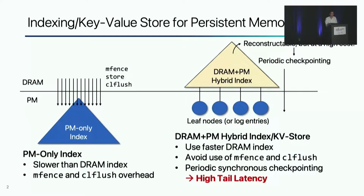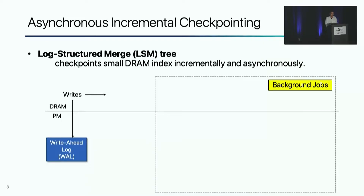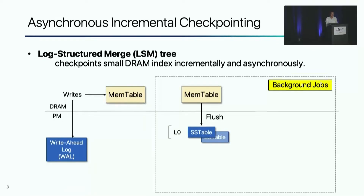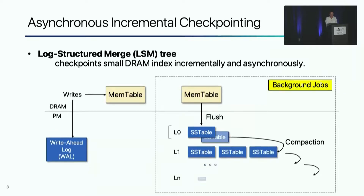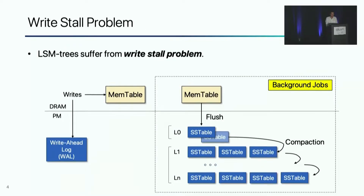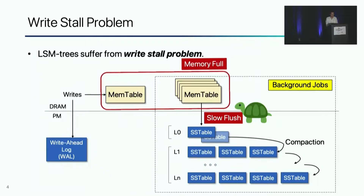To reduce the recovery time, the DRAM index can be checkpointed periodically. However, this causes very high tail latency because write operations are blocked during checkpointing. A better approach is asynchronous incremental checkpointing. Log-structured merge trees buffer writes in a small DRAM index called memtable. When a memtable gets full, an LSM tree checkpoints the current memtable by flushing it into persistent storage. Then the LSM tree consolidates checkpoint data over time by background compaction. However, LSM trees may block write queries as in synchronous checkpointing if the workload is write-intensive. If the flush is not fast enough, DRAM usage will be high, and most LSM tree-based key-value stores block write queries when DRAM usage is too high. This is called the write-stall problem.